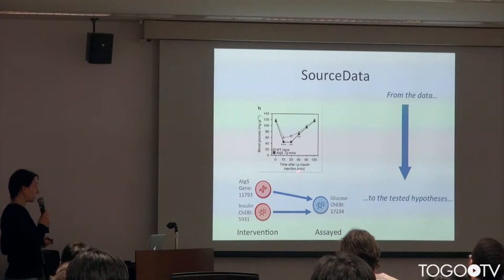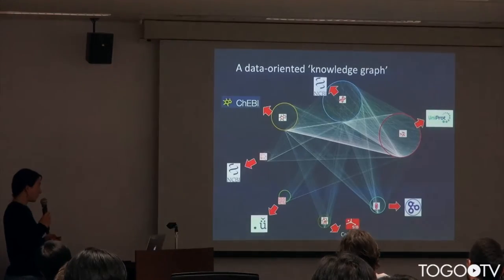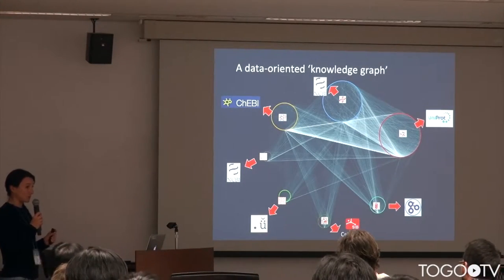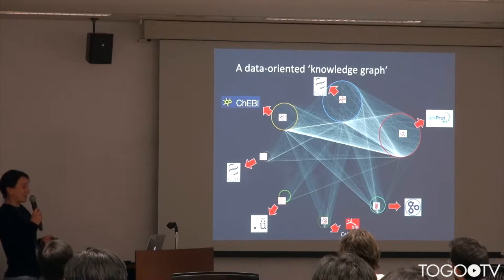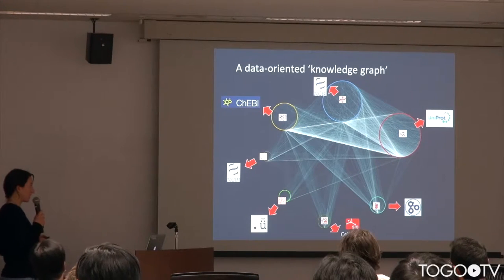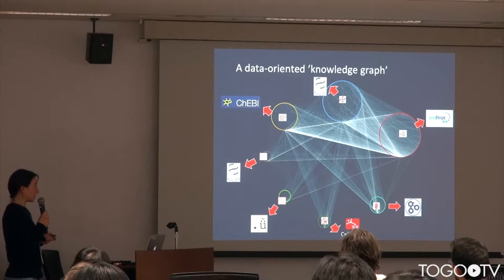For example, in this figure: does insulin influence the concentration of glucose? This relation — intervention and assay — allows us to create an oriented graph. And this graph represents links between experiments. All entities are normalized on official databases.